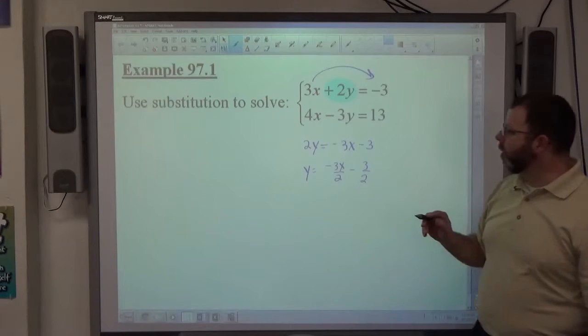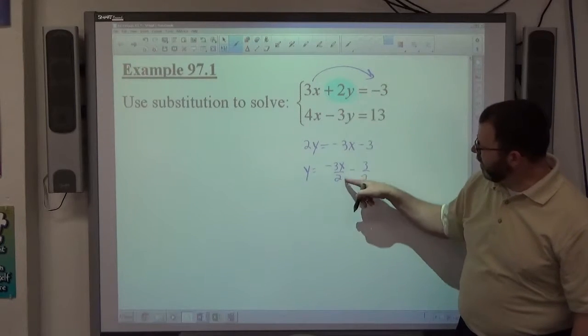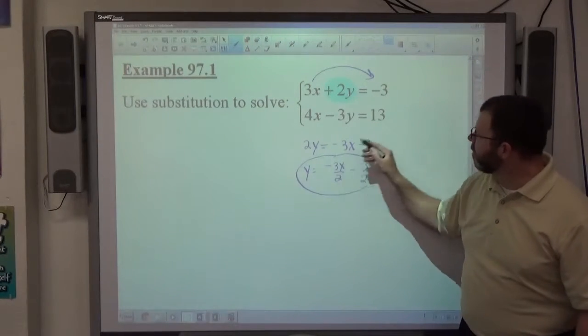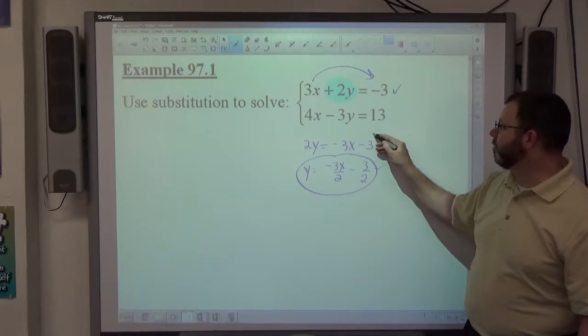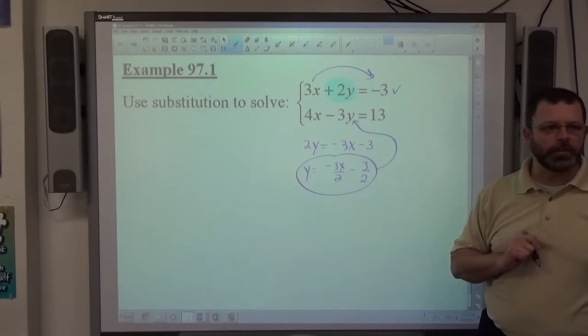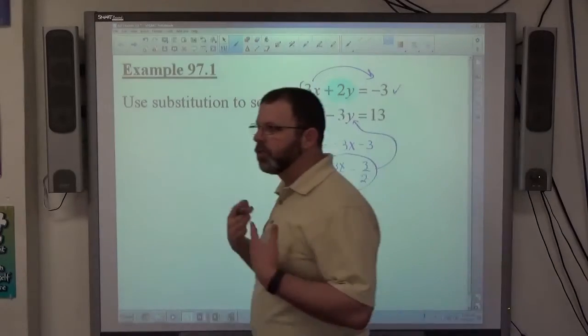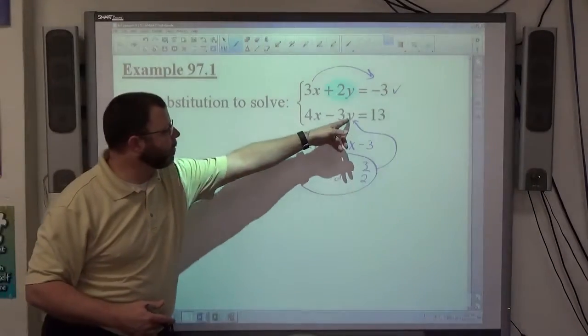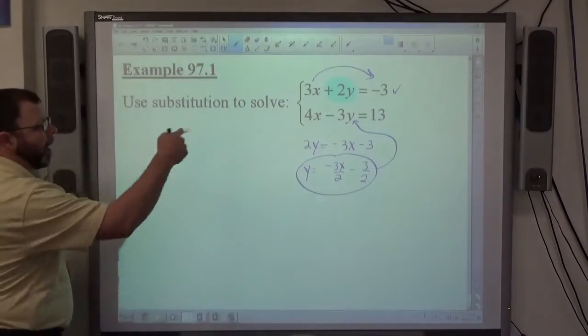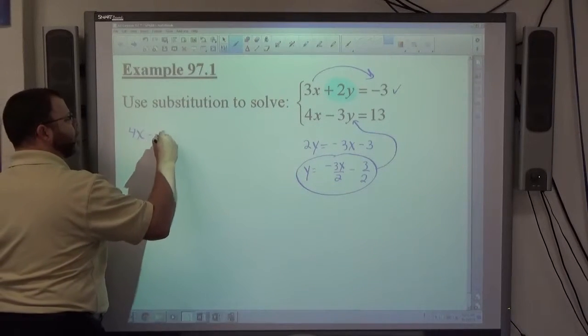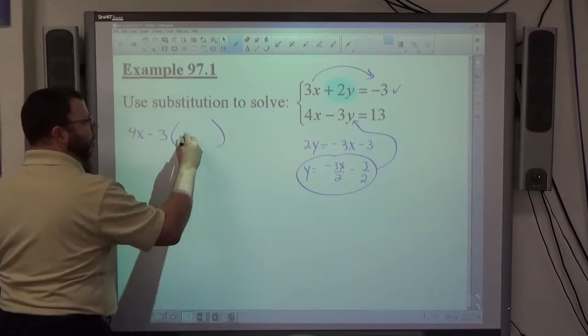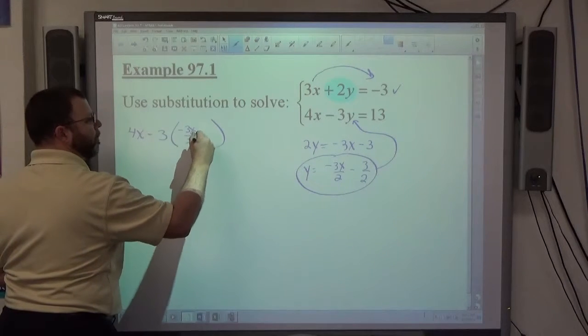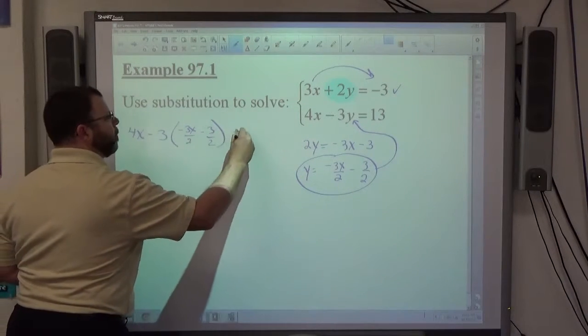As substitution always works, I got this information here from the top equation, which means I'm going to substitute this information back into the bottom equation. The substitution is what it always has been. Y equals this expression. I take y out of this equation, change it to that expression. So the bottom equation becomes 4x minus 3, but instead of y, I'm going to put negative 3x over 2 minus 3 over 2 equals 13.